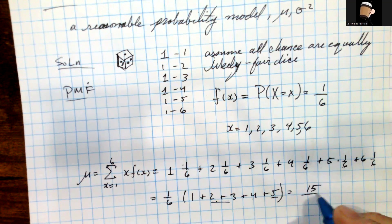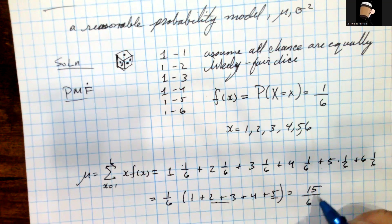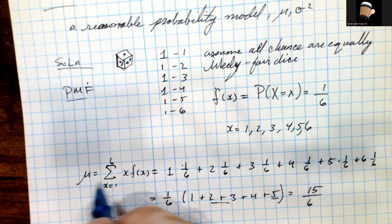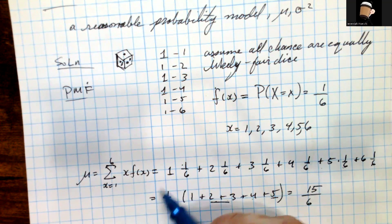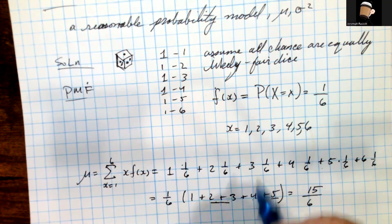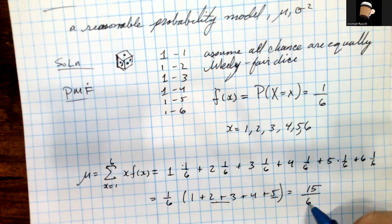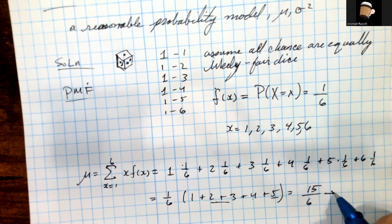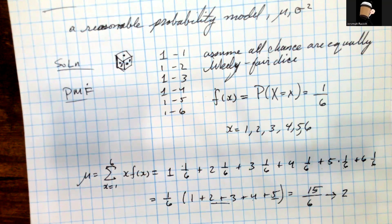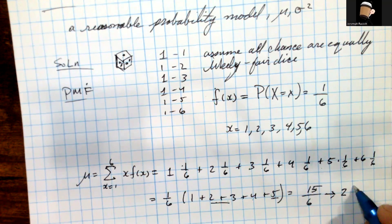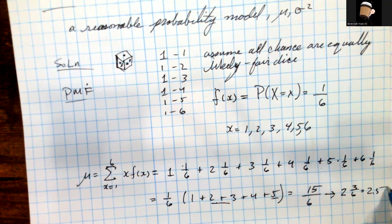So the mean is 15 over 6. Notice that 15 over 6 is not an integer value, so the mean we'd expect from rolling the die is not one of the values you'd actually see on the die. Dividing, 6 goes into 12 twice with 3 remaining, giving two and a half.